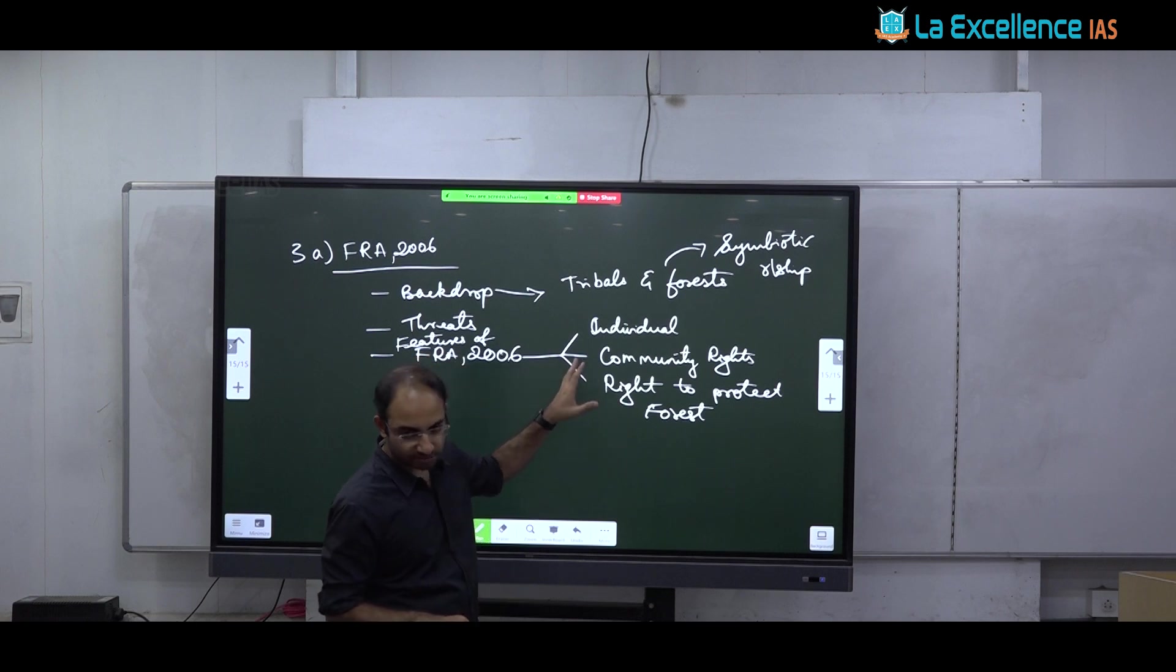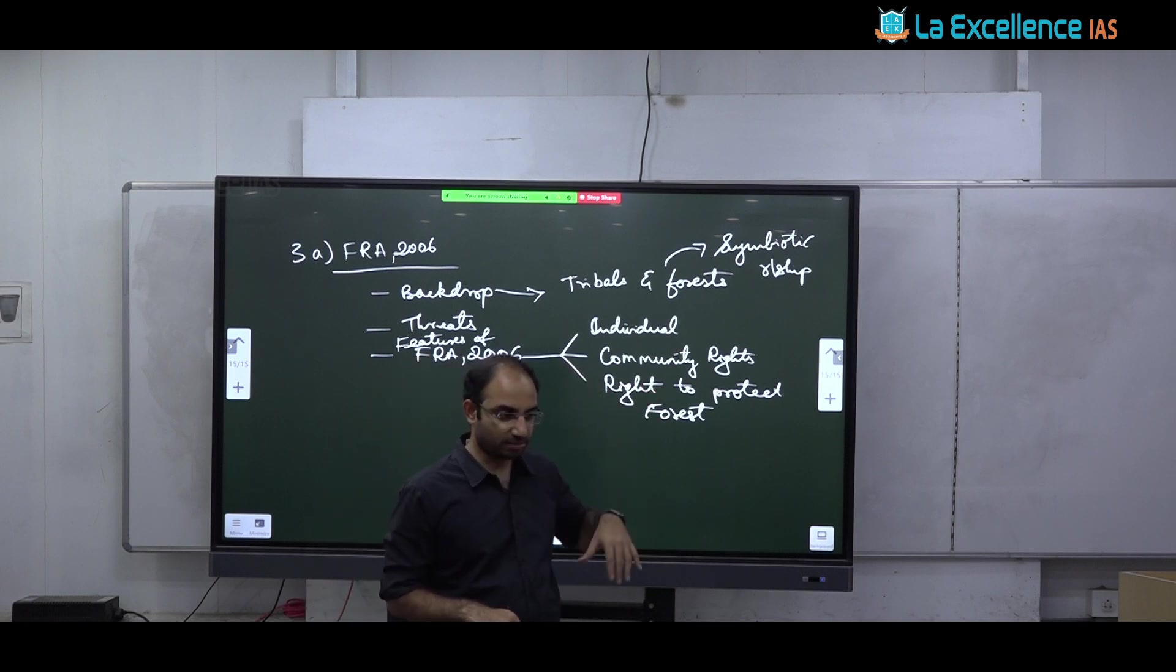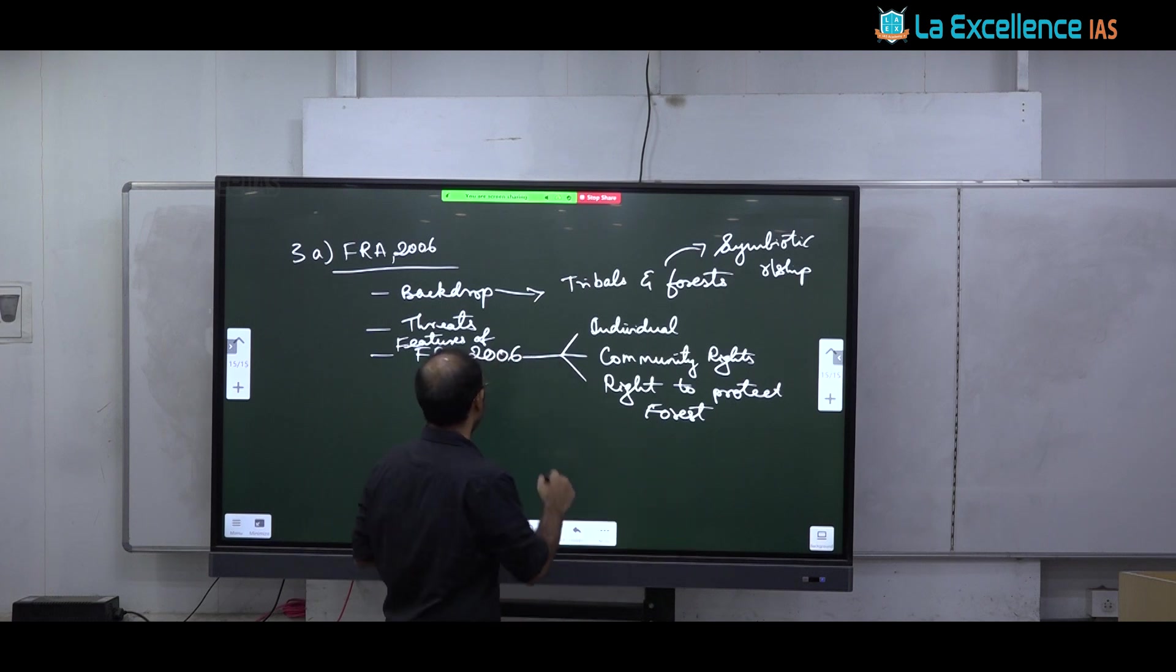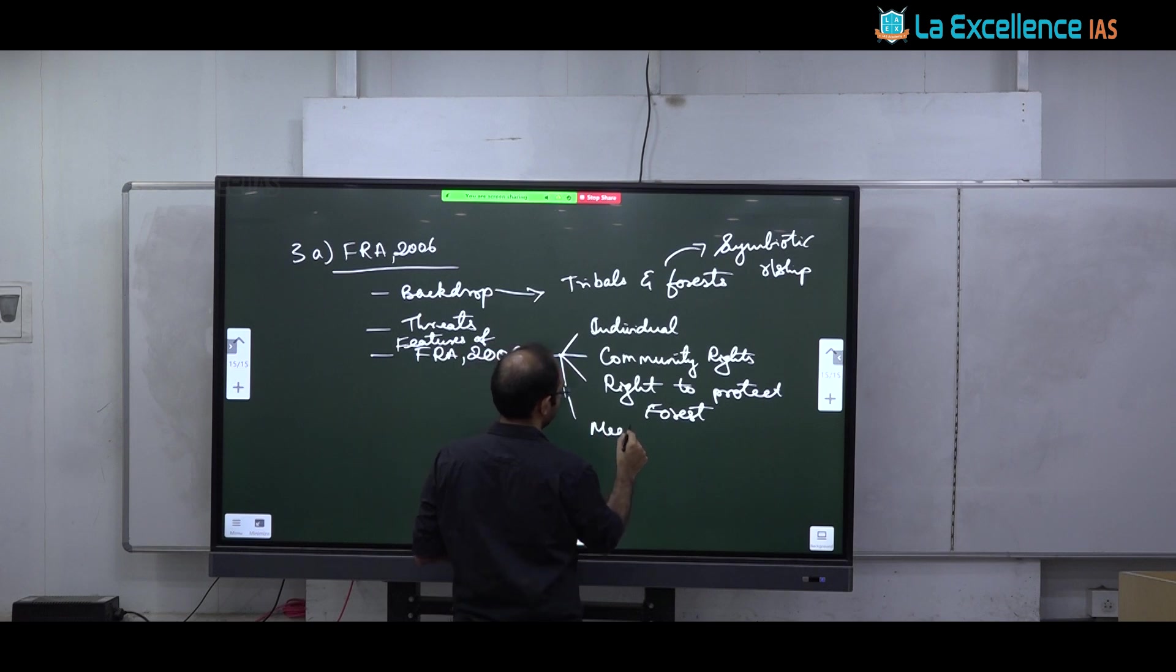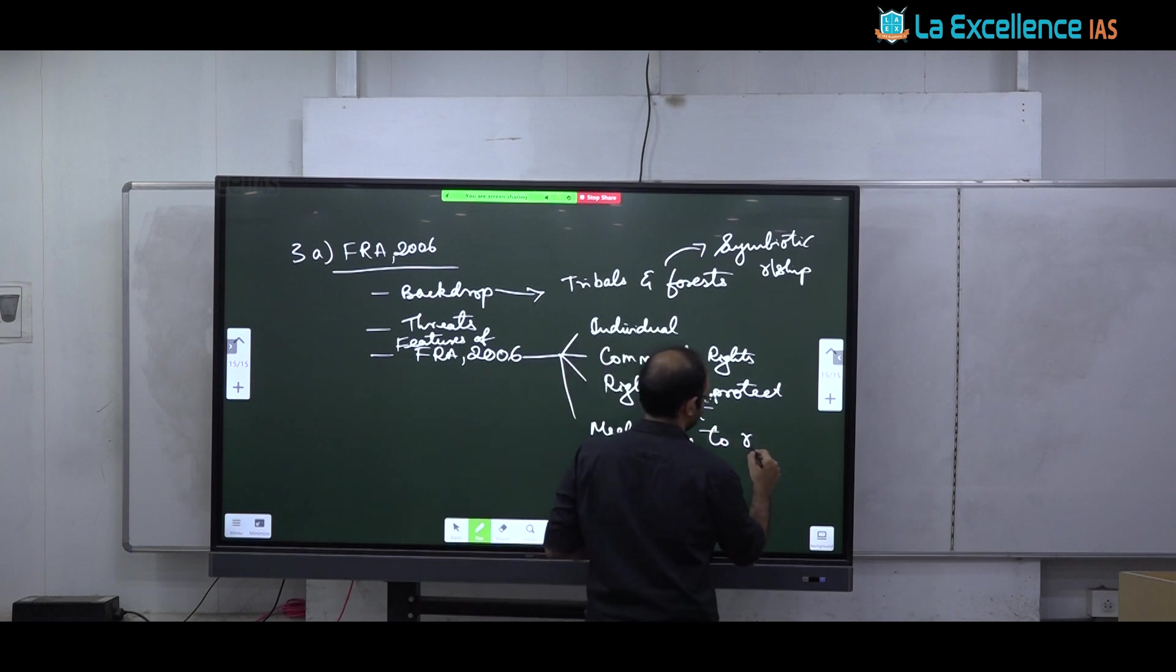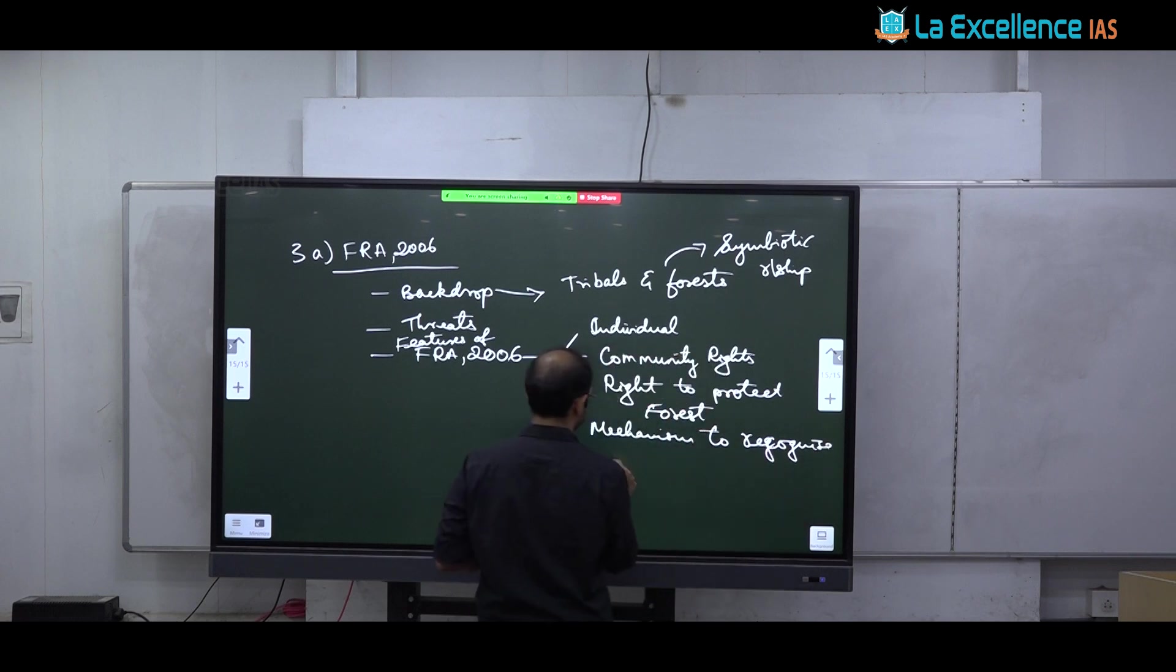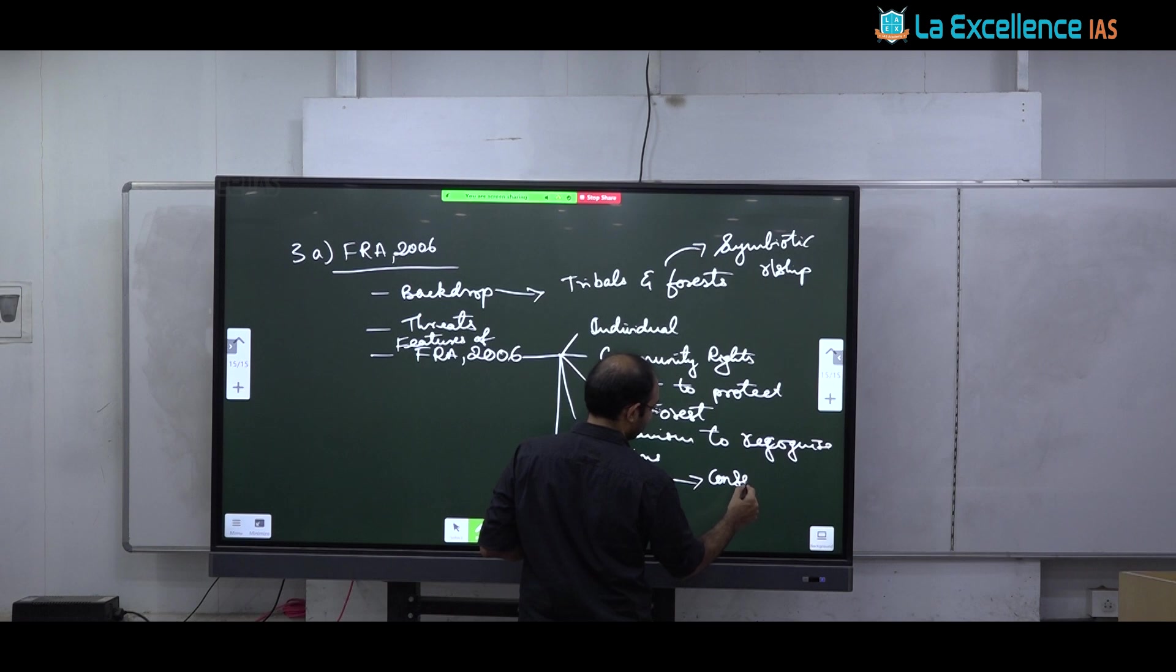The Nyamgiri Hills movement. So this case study can be written. And then, problems in implementation of FRA. Many problems. One, claims are rejected. Second, you can talk about how they are using various excuses to avoid implementing this act. Excuses like, for example, there is one exception, critical wildlife habitat. So if this particular area is important for critical wildlife habitat, then that area can be exempted from FRA. So they are randomly declaring areas they like as critical wildlife habitats.